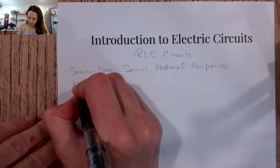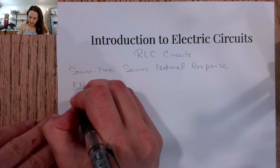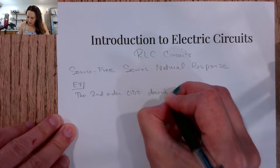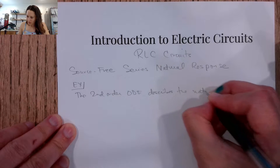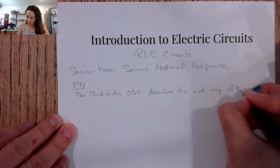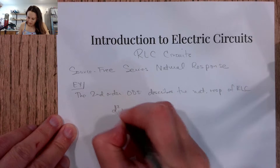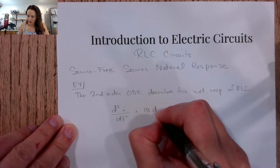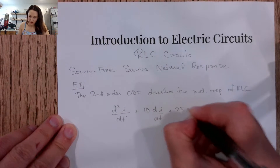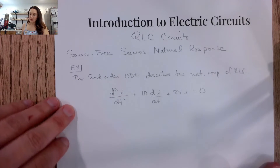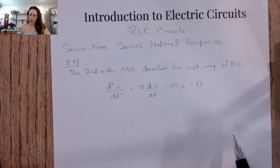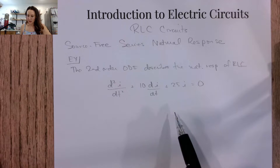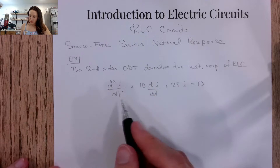Suppose we get a problem that looks like this. They tell us that the second order ODE describes the natural response of an RLC circuit. They give us: 2(d²i/dt²) + 10(di/dt) + 25i = 0. In the last example problem we were given a circuit diagram with values for R, L, and C, but this time they are just giving us the differential equation.